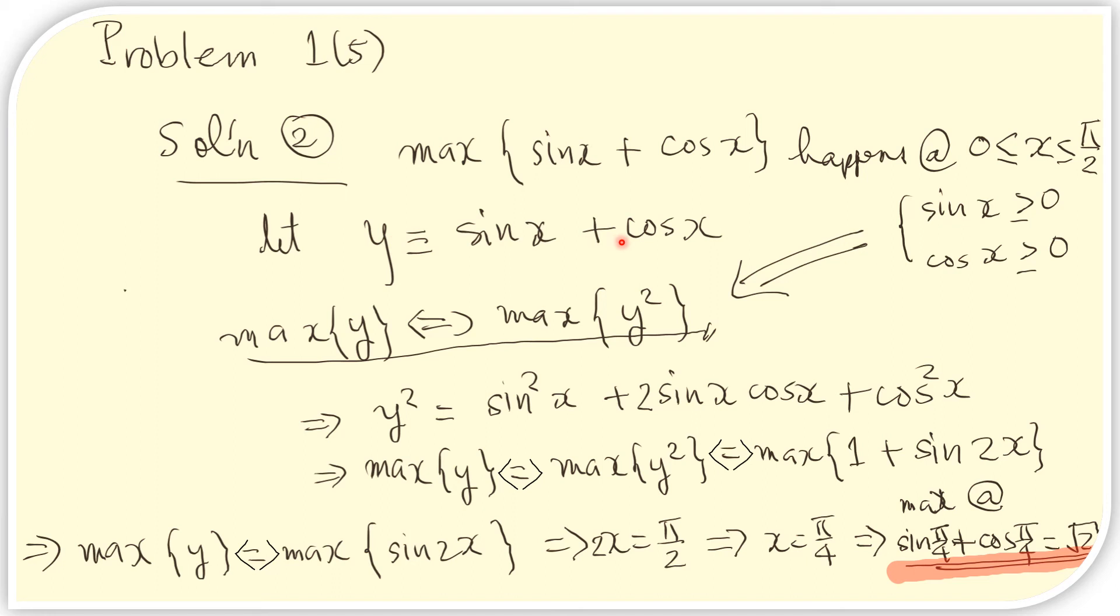they are maximum at the point where their squares are also maximum. So we can say that y is maximum when y² is maximum. We are not saying that their values are equal at maximum. We are saying that they happen at the x value, at the same x value where they are maximum. So in this case, we need to find the x value of y² that makes it maximum.